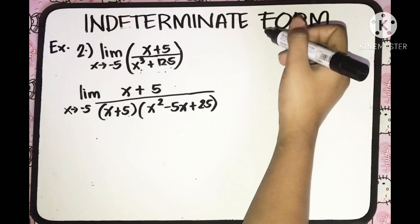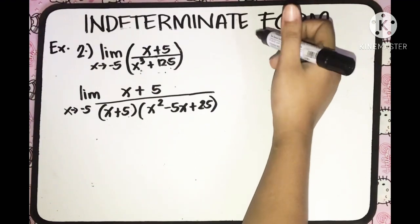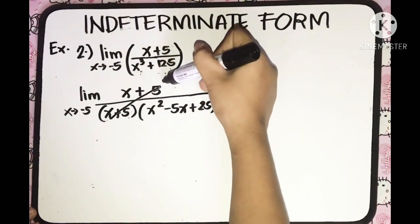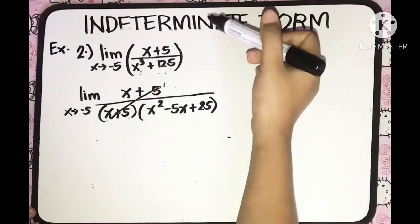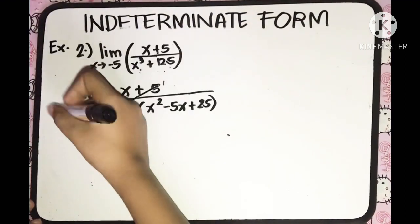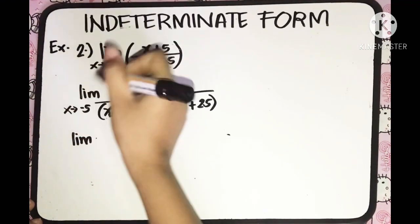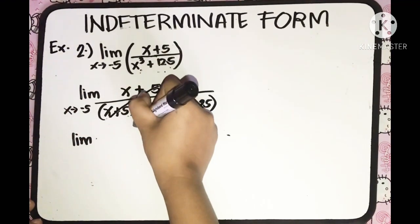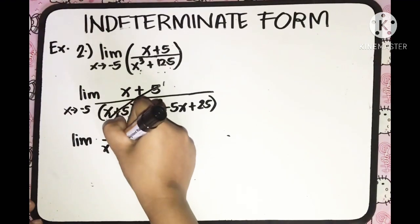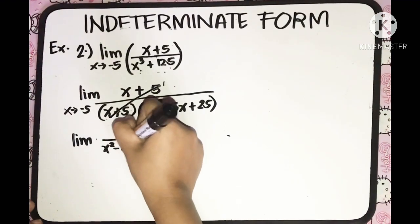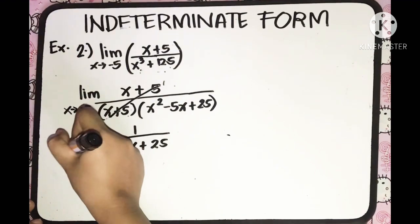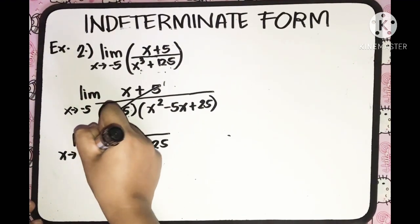We can cancel out (x plus 5) from numerator and denominator since it equals 1. Don't forget the 1 in the numerator. The remaining function to find the limit of is 1 over (x squared minus 5x plus 25) as x approaches negative 5.